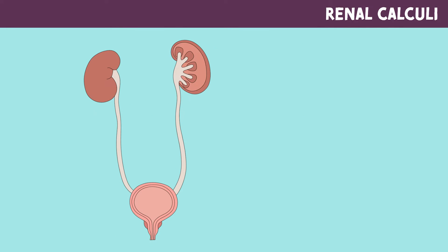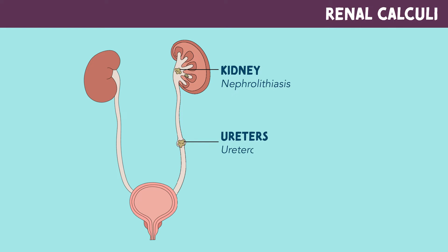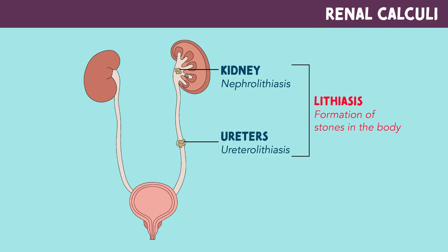These stones can be found in the kidneys — this is called nephrolithiasis. They also can be found in the ureters, which is called ureterolithiasis. It's important to know that lithiasis means formation of stones in the body, and stones can also be found in the bladder, called bladder calculi.